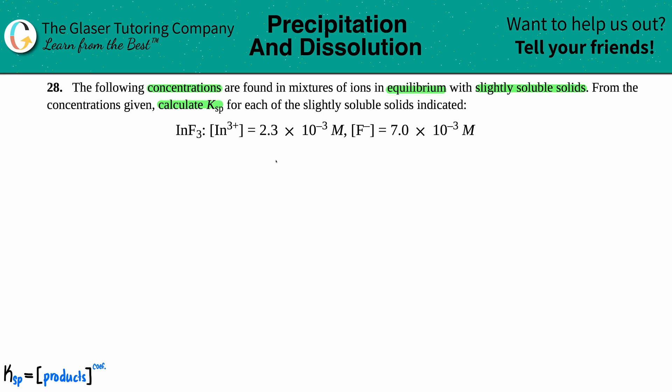In this case they tell you the ions, so that's beautiful, no guessing really. So we have InF₃ that's a solid and this will come to equilibrium because we're dealing with K values, with our two ions: In³⁺ and F⁻. Since I see charges, I know that's going to be aqueous.